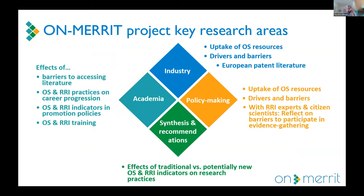We looked at different areas: the effects of and barriers to accessing literature, uptake of open science resources in industry and the drivers and barriers there, analyzing patent literature, and uptake of open science resources within policy making itself. This was the first two phases of the project, and the final phase was this synthesis and recommendations process — the output we'll discuss today.